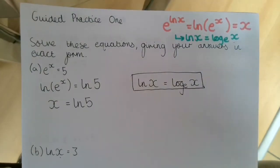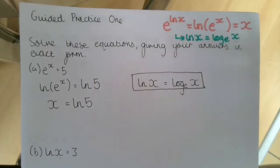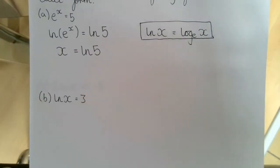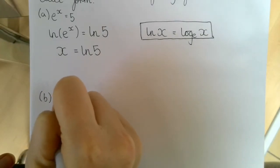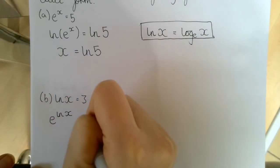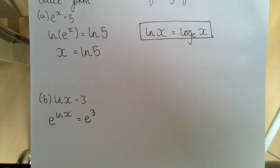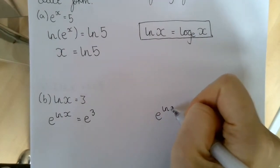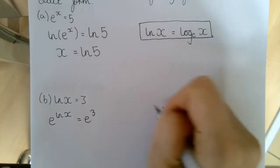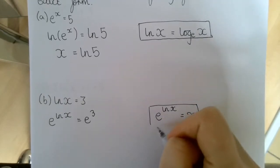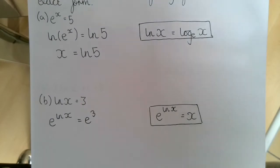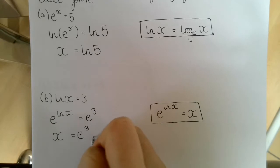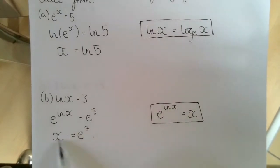The second part: ln(x) equals 3. We're going to take the exponential of each side so that we get x on its own. The exponential of ln(x) equals the exponential of 3, which is e to the power of 3. Since e to the power of ln(x) equals x, we get x equals e to the power of 3. That answer is left in exact form.